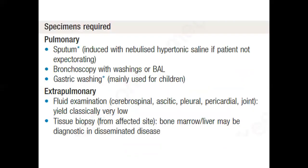For diagnosis: if a patient presents with respiratory or constitutional symptoms and tuberculosis is suspected, the first step is sputum collection and sputum examination, which is a non-invasive and easily available test. Other tests include bronchoscopic washing or bronchoalveolar lavage. In children, gastric washing can also be used. For extra-pulmonary tuberculosis, the required specimens are cerebrospinal fluid, ascitic fluid, or tissue biopsy from the affected site.